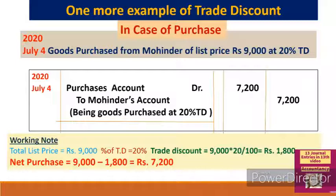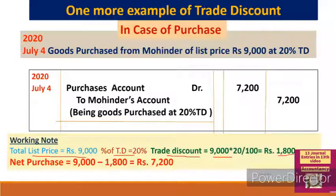Goods purchased from Mahinder of list price rupees 9,000 at 20% trade discount. Mahinder has purchased goods worth 9,000 at 20% trade discount. The procedure is the same: total list price is 9,000, trade discount at 20% = 9,000 × 20/100 = 1,800. Net purchase = 9,000 − 1,800 = 7,200. So the purchase entry will be for 7,200.